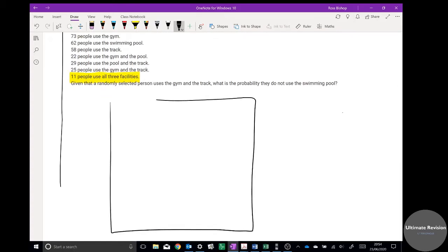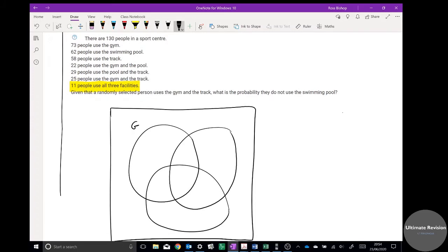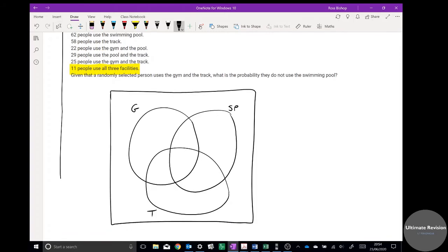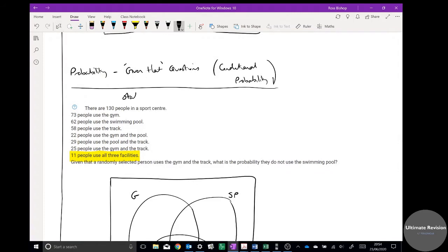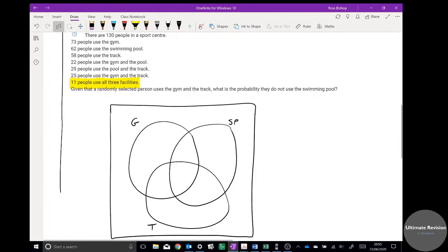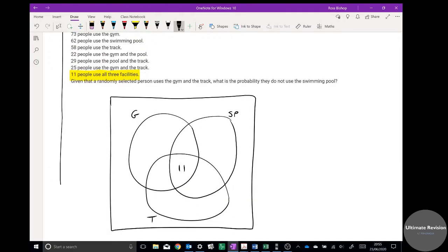My advice for these questions is to draw them really big to help you visualize what's going on. Nice and big. We've got some people using the gym, obviously no one at the moment because of COVID. We've got some people using the swimming pool, I'm going to put SP for swimming pool, and we've got some people using the track. And again for these questions, it's best to start from the inside out. That's the best way to do it.